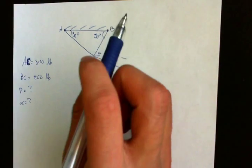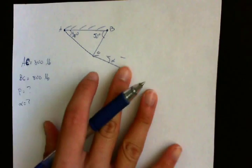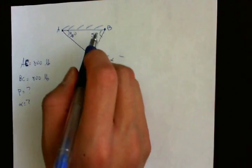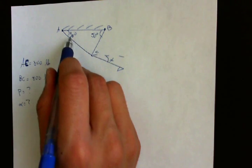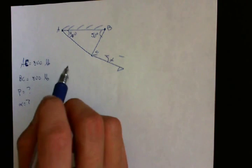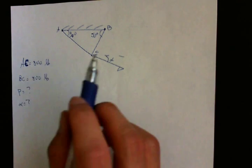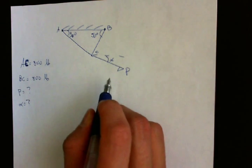Okay, so in this example we're given a system with ropes AC and BC. They're both attached to this wall at an angle of 50 degrees and 30 degrees. So given that the tension in ropes AC and BC are equal to 800 pounds, determine the force P and the angle alpha.